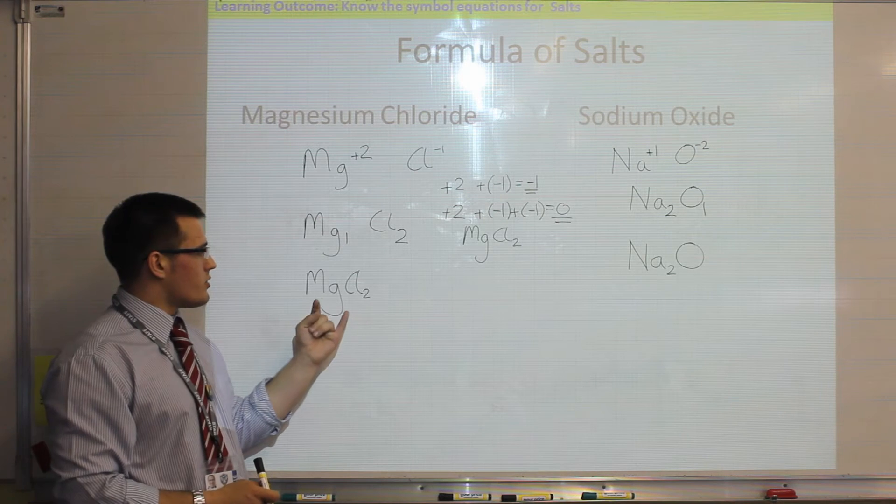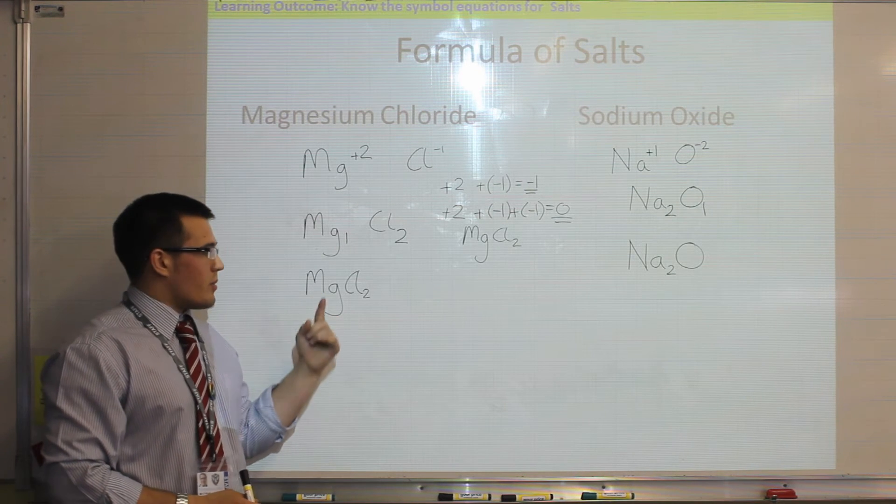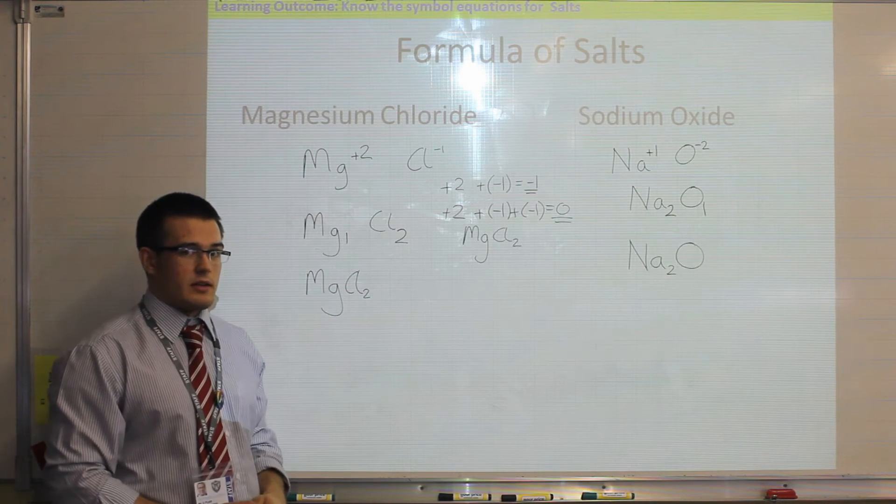Remember, that is the chemical formula of the salt. If I was doing it in a balanced equation, I may still need several multiples of this, but that is the basic formula. So now let's look at when we've got, rather than just 2 elements, when we're adding 1 ion and a polyatomic ion together.